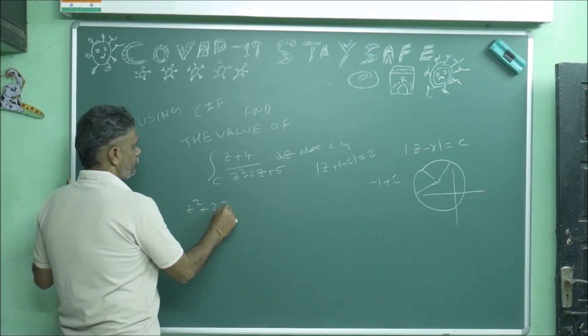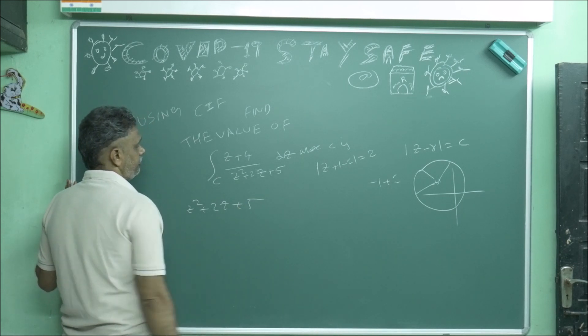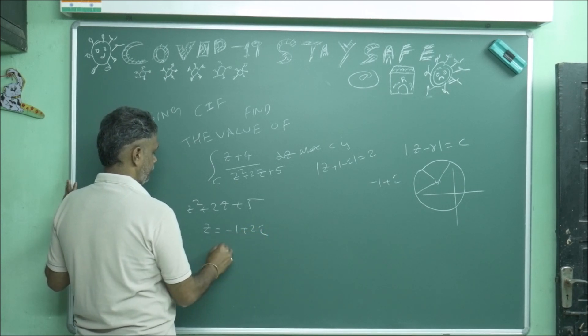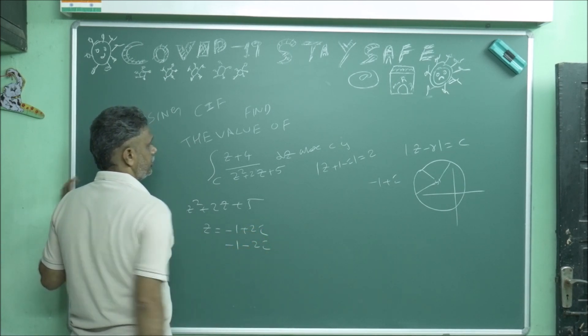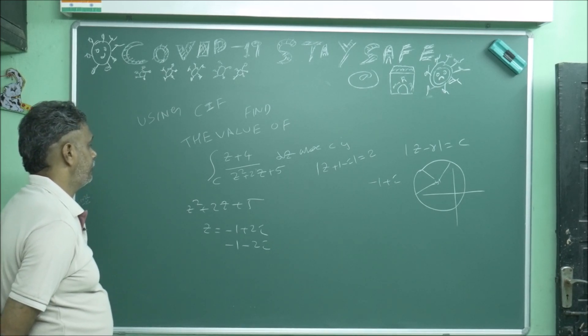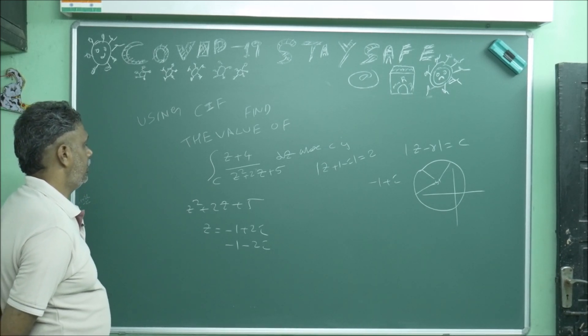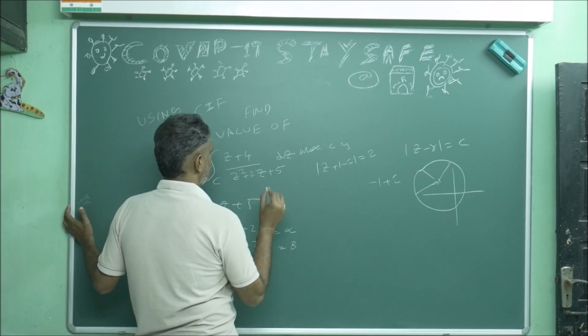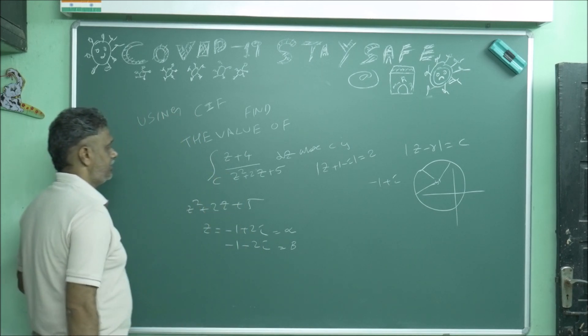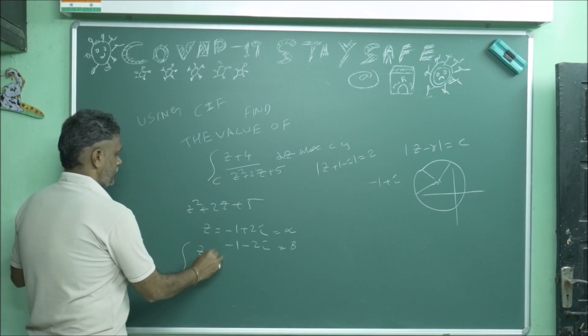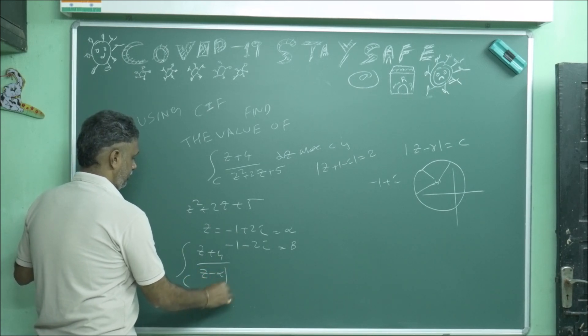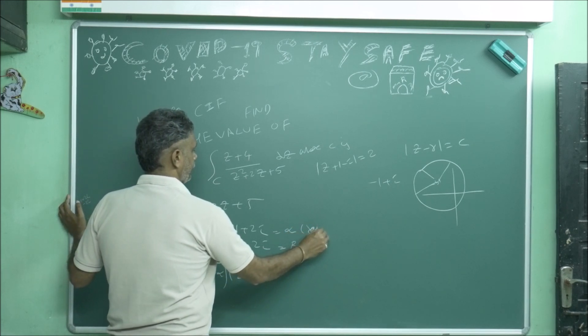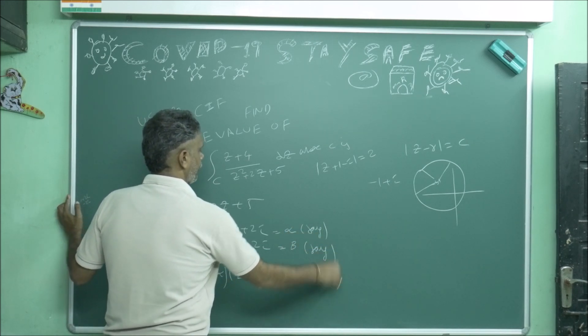Z squared plus 2Z plus 5. -b ± √(b² - 4AC). So if you do this, what are the roots? You will get -1 + 2i and -1 - 2i. Now you can call this as alpha, this as beta. So Z squared coefficient 1 means I can write integral over C (Z + 4) divided by (Z - α)(Z - β) dZ.